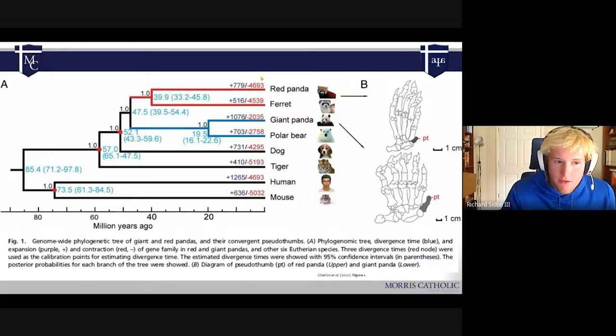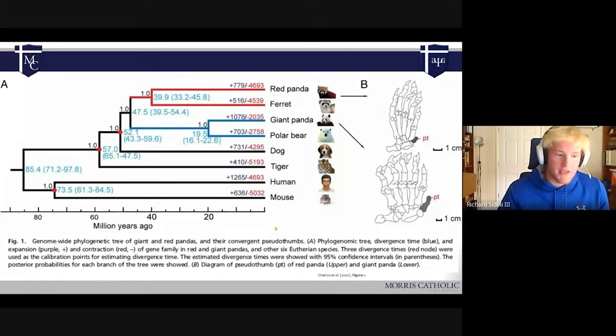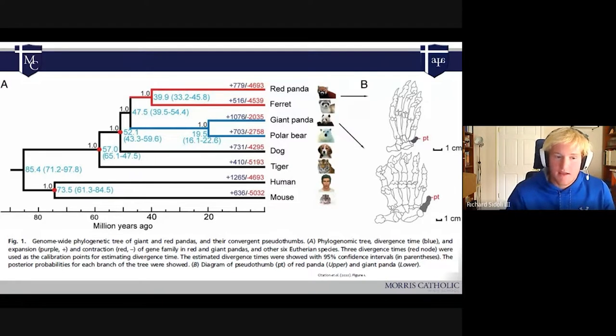So it's saying that 4,693, usually it'd be genes. I talked to Dr. Char about this, but it says of gene family. So we don't know exactly what they're trying to say here. It's presumably just some sort of genetic information being lost or gained between a common ancestor.